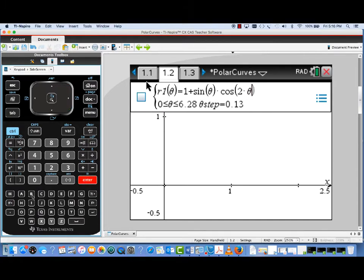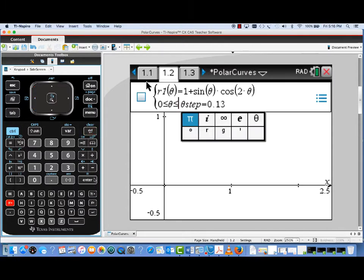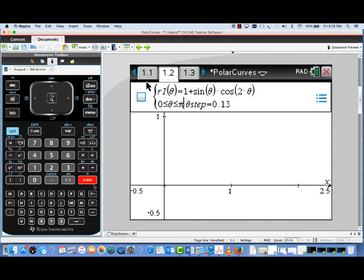So here we've got R1 of Theta equals 1 plus sine of Theta, cosine of 2 Theta. And now we're also going to want to change our Theta range to match that of the curve that was presented in the problem. Instead of going from Theta 0 to 2 Pi, we're going to go from 0 to Pi over 2. So I'm editing that range for Theta to 0 to Pi over 2.